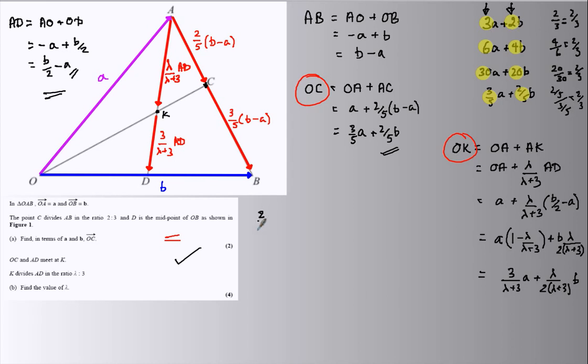And in the OK, I should see the same mix of A's and B's. I've got lambda over 2 lambda plus 6. And the B's that I see are 3 over lambda plus 3.